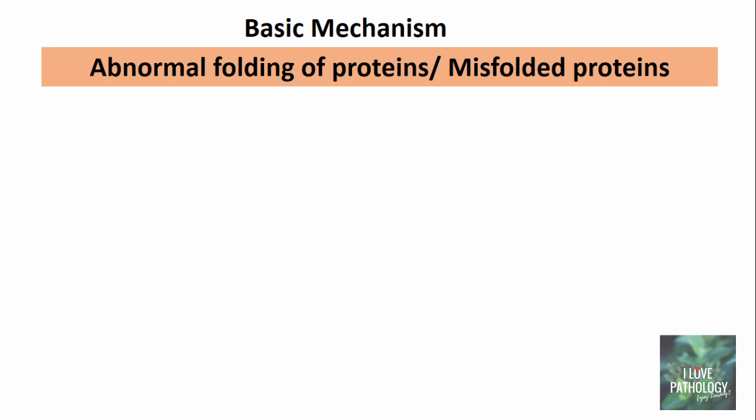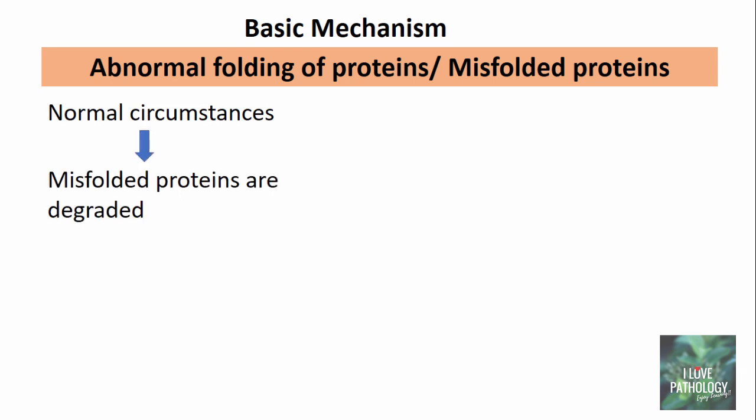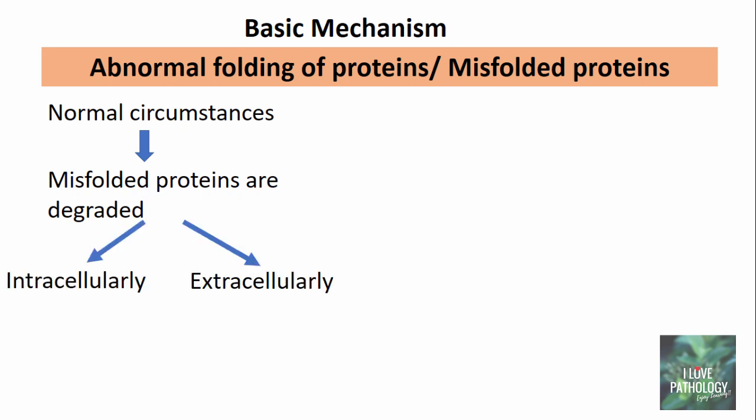What really happens when proteins are misfolded is that the normal function of the proteins is lost. Apart from the normal functions being lost, they become resistant to degradation — that is the most important thing. Under normal circumstances, these misfolded proteins are degraded either intracellularly or extracellularly. Intracellularly, the degradation is by the proteasome pathway, which is the major proteolytic pathway. The misfolded proteins are tagged by ubiquitin, and these ubiquitinated proteins are degraded by proteasomes.